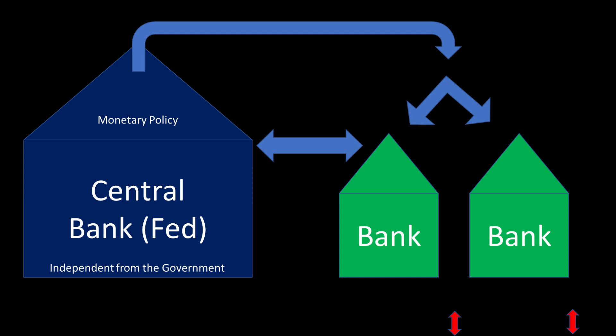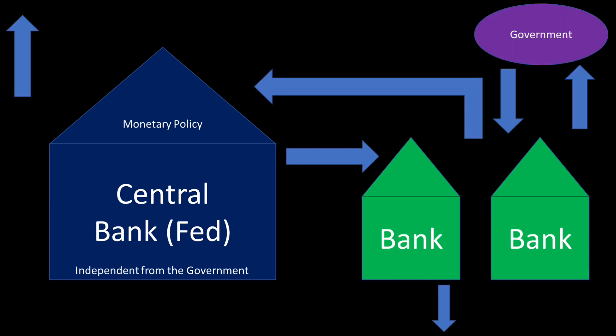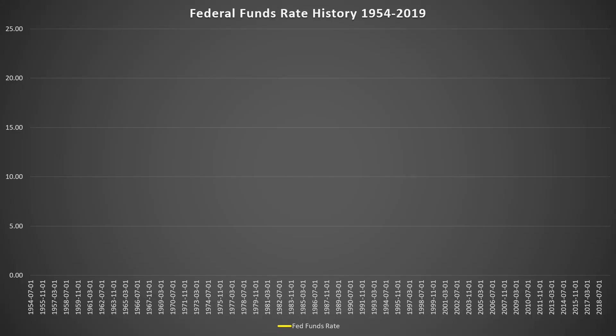Here we're going to look at the history of the federal funds rate and how it's been used throughout history to help with recessions, inflation, unemployment, and more. As we've gone over in previous videos, the Fed raises rates to keep mainly inflation and prices in check, and lowers rates to increase spending, stimulate the economy, fight unemployment, and bring the economy out of recessions.